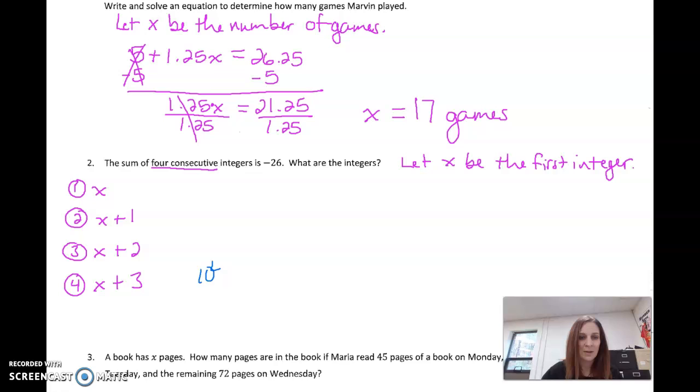So the sum, sum is the solution to an addition problem. So, we get negative 26. So I'm going to go x plus x plus 1 plus x plus 2 plus x plus 3. And that equals negative 26. Now, just to keep in mind, if these were consecutive odd or consecutive even integers, we don't add 1 every time we add 2. We'd say let x be the first even integer or the first odd integer.